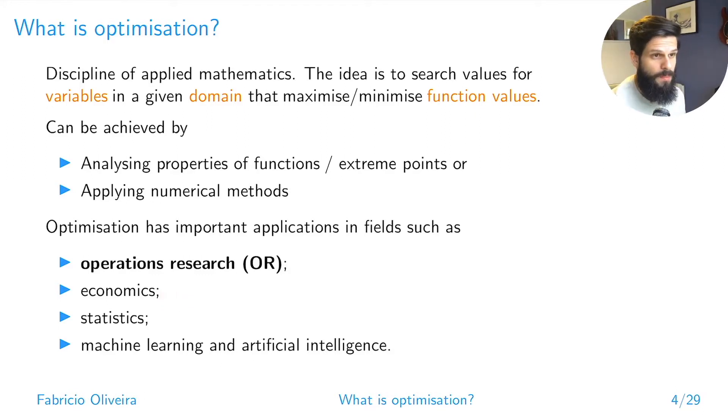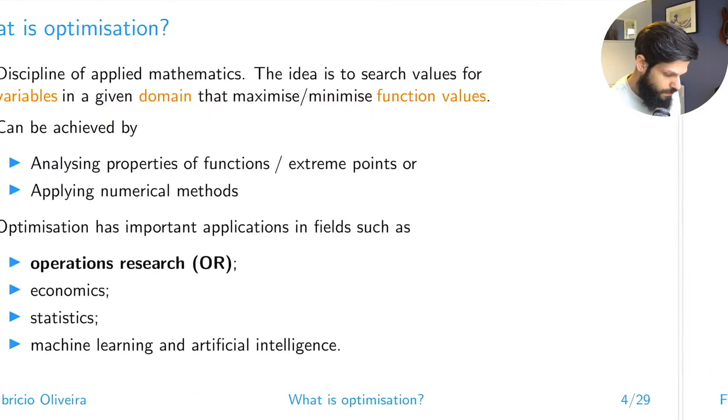Optimization pops up in economics—things related with demand curves and profit curves and positioning yourself to find points of equilibrium. Statistics: whenever you're fitting a distribution model to your data, you are solving an optimization model. More broadly and more recently, things related to machine learning and artificial intelligence, like classification methods, regression and clustering, neural networks—these are all based upon an underlying optimization method.